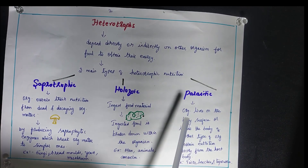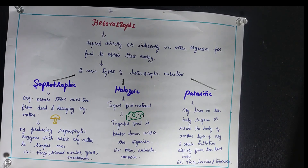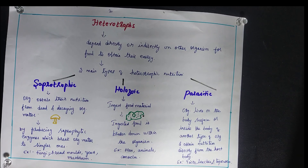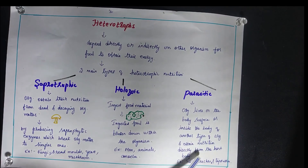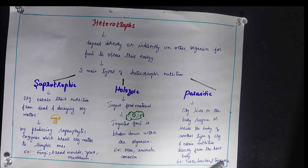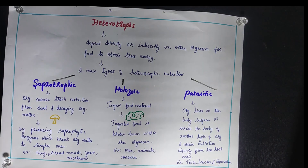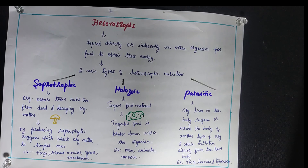The next is parasitic mode of nutrition, where the organism lives either on the body surface or inside the body of another organism. These parasitic organisms require a host organism for survival. They get nutrition directly from the host body. Examples are ticks, leeches, and tapeworm — parasitic organisms that thrive on other organisms by living either outside or inside the body.